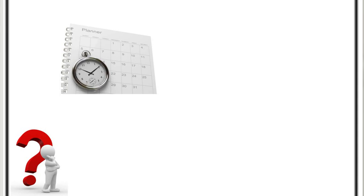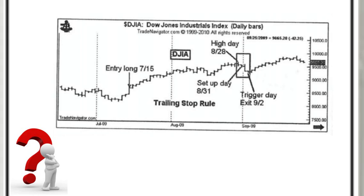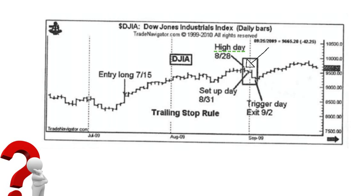A simple rule offered is use the same time frame to manage the trade as you did to enter the trade. Therefore, if you entered the trade using the weekly chart, don't try to justify the exit by using a daily or hourly chart. A more complex rule suggested is the trailing stop rule. Peter prefers a trailing stop based on price action as opposed to a fixed percentage or dollar amount. In summary, Peter's exit rule here taken from his book is based on three metrics: one, the high day, which is the last daily high recorded; two, the setup day, which is when the close of the day is below the low of the high day; and three, the trigger or exit day, which is when the low of the setup day is exceeded.